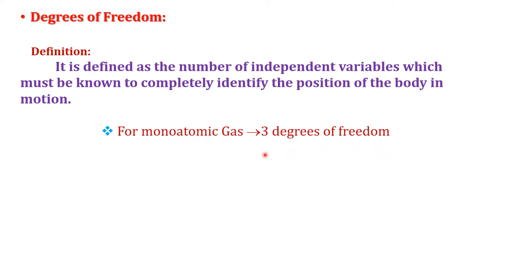For monoatomic gas — for example, a noble gas — the molecule has only one atom. Such a molecule can move anywhere in space, hence its velocity gets specified along three components: velocity components along the x, y, and z axes. Therefore, a monoatomic gas has 3 degrees of freedom.